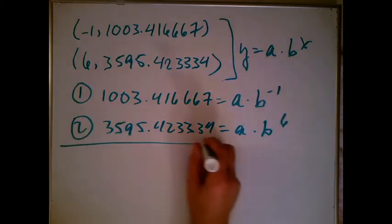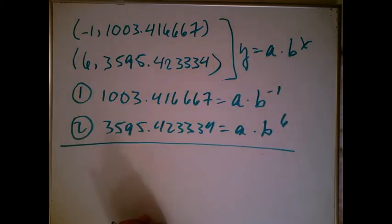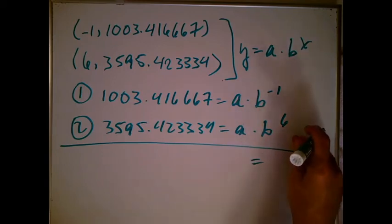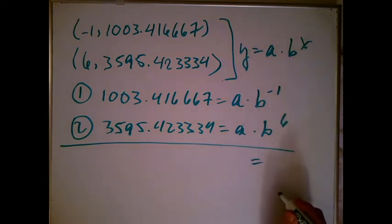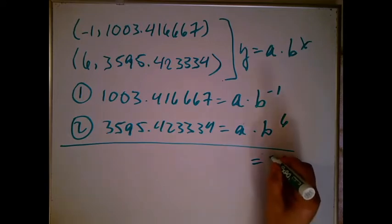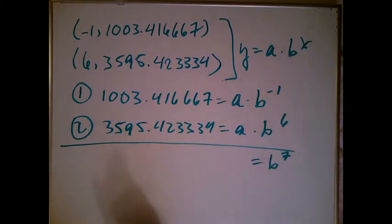And what we did yesterday first is we took equation two and divided by equation one. Let's get the right-hand side first. When I take a times b to the sixth divided by a times b to the minus one, you get b to the seventh. Now when I take 3595 divided by 4 point blah blah blah, I'm going to come over here and I'm going to let Excel do this.